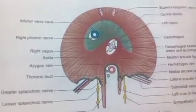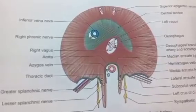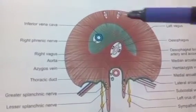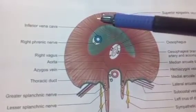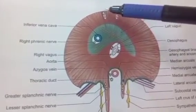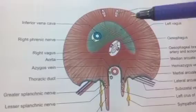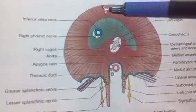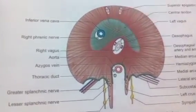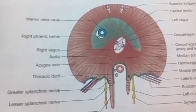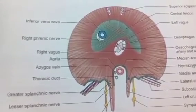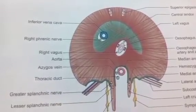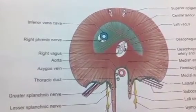The superior epigastric vessels and some lymphatics pass between the xiphoid process and the 7th costal cartilage. This space is known as Larrey's space or the foramen of Morgagni. The musculophrenic vessels pierce the diaphragm at the level of the 9th costal cartilage.